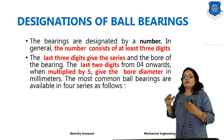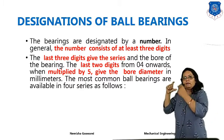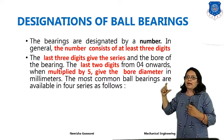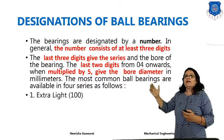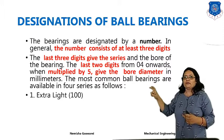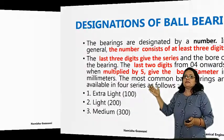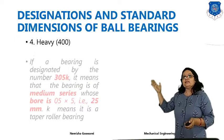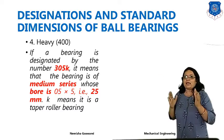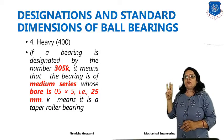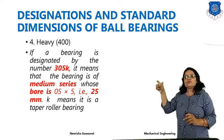The bore diameter means the inner race diameter where balls are placed, as we saw in the last lecture. These bearings are available in four types of designation: when used for extra light load it is denoted by 100, for light load 200, for medium load it is denoted by 300, and for heavy load it is designated by 400.